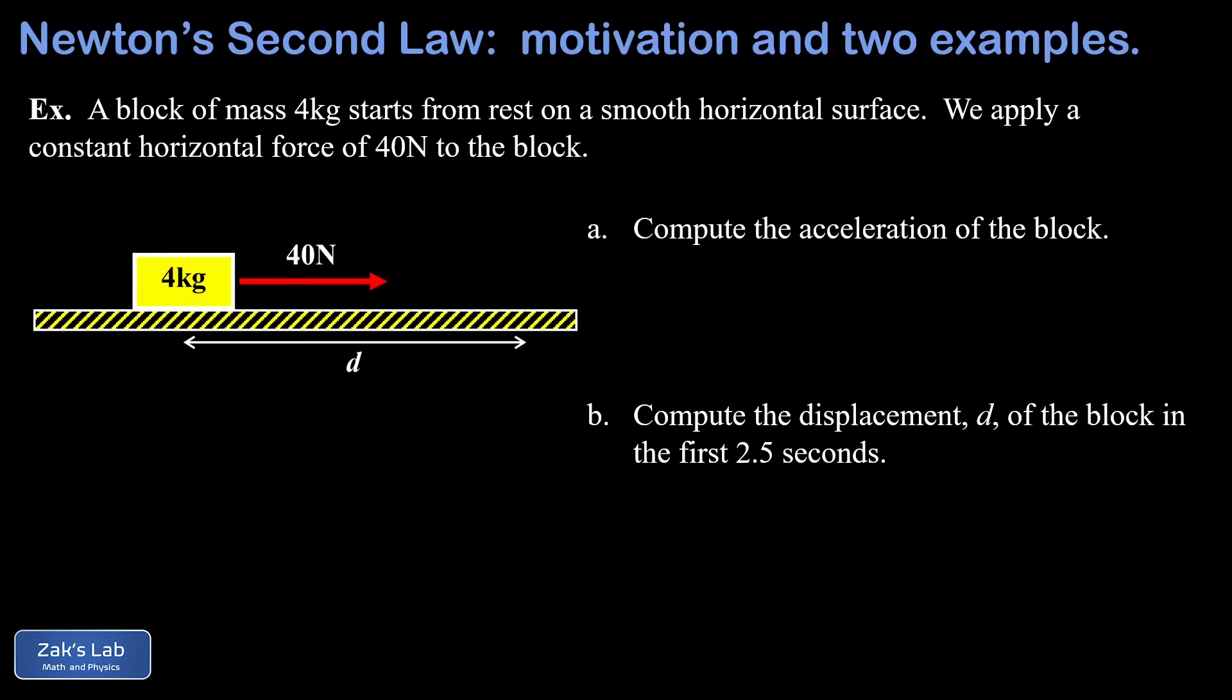To get a sense for how we apply Newton's second law, we're going to look at a couple simple examples. So in our first example, we have a block of mass 4 kilograms, starting from rest on a smooth horizontal surface, and we apply a horizontal force of 40 newtons to it. Now that word smooth means we don't have to worry about friction forces. And the fact that the block is constrained to this horizontal surface means all we have to look at is a horizontal analysis of the forces. It's true that gravity is pulling down on the block, and actually the surface is pushing back up on the block. But those two forces exactly cancel in order to keep the block constrained to the surface, so we're not even including those in our analysis.